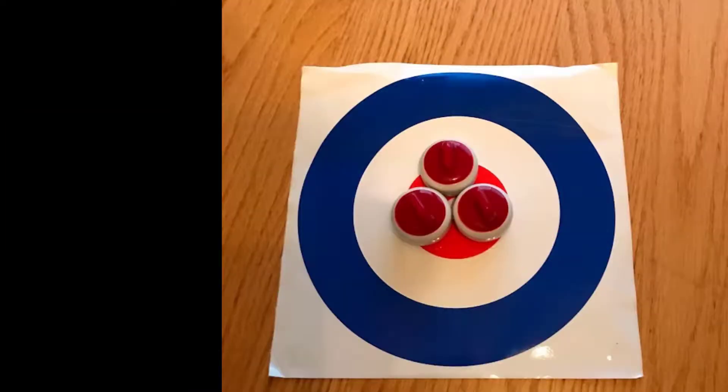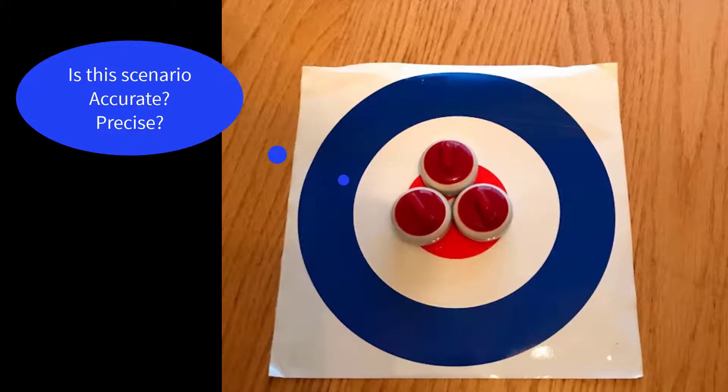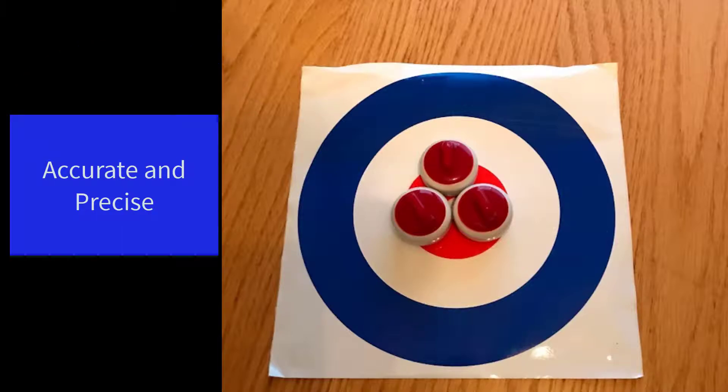Let's look at a few more scenarios. What about this one? The measurements are near the target value, and the measurements are near one another. We say that this configuration is both accurate and precise.